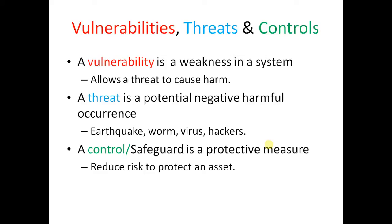A vulnerability is a weakness in a system that allows a threat to cause harm. A threat is a potential negative or harmful occurrence — such as an earthquake, war, virus, or hackers. A control or safeguard is a protective measure that reduces risk to protect against harm.